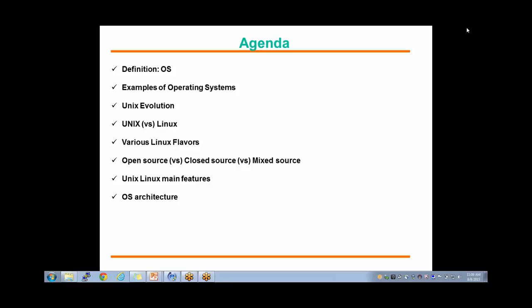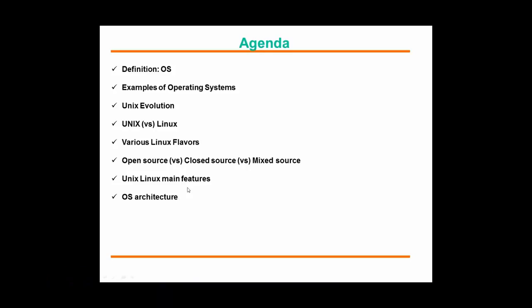We are going to see various lists of operating systems available in the industry, which is quickly followed by UNIX evolution. We are also going to see the difference between UNIX and Linux, the various Linux flavors in the industry, the difference between open source, closed source, and mixed source operating systems, and finally the main features of UNIX and Linux followed by OS basic architecture.